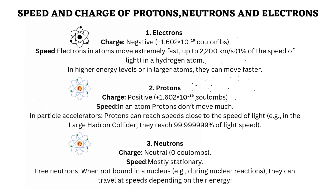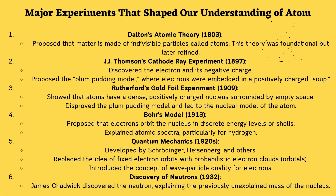Protons carry a positive charge. In an atom, protons don't move much. In particle accelerators, protons can reach speeds close to the speed of light. Neutrons are neutral — they carry no charge and are mostly stationary. Free neutrons, when not bound in a nucleus — for example, during nuclear reactions — can travel at speeds depending on their energy.